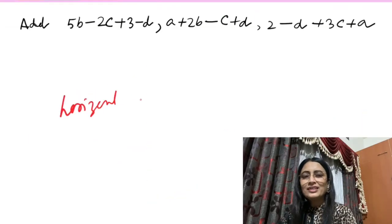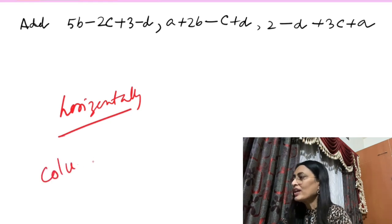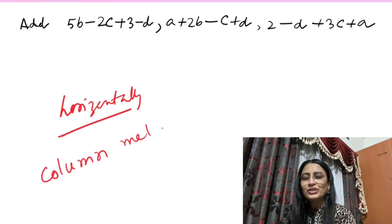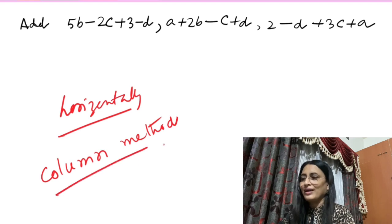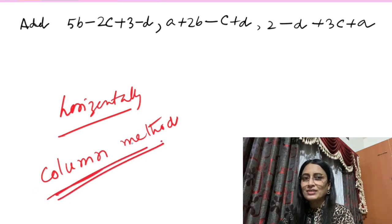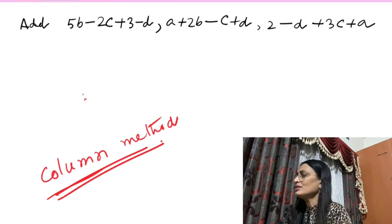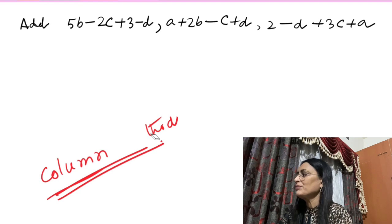Now children, in the previous sum we did the sum horizontally, and there is another method known as column method. Let's solve one addition sum and one subtraction sum using this method. This is question number three.